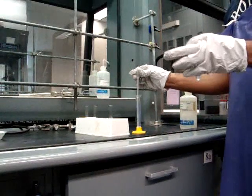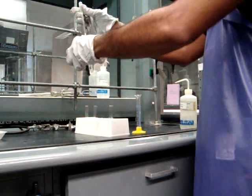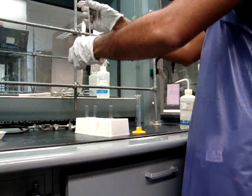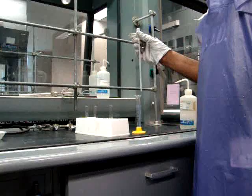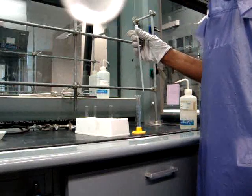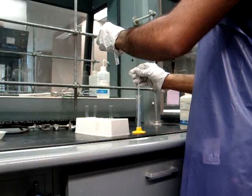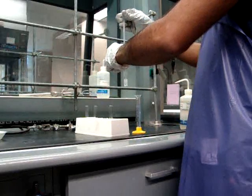You will then add your 1 milliliter of sulfuric acid into the test tube. You want to make sure that you mix the contents well, which you can do by flicking the tube. The acid will also remove any unreacted starting material from the solution.